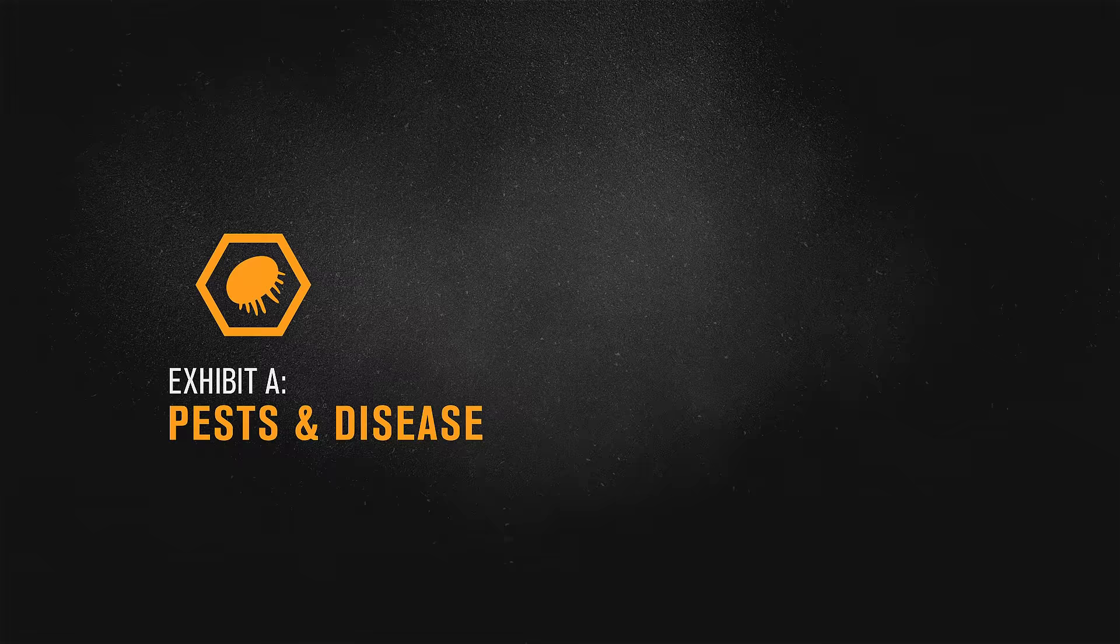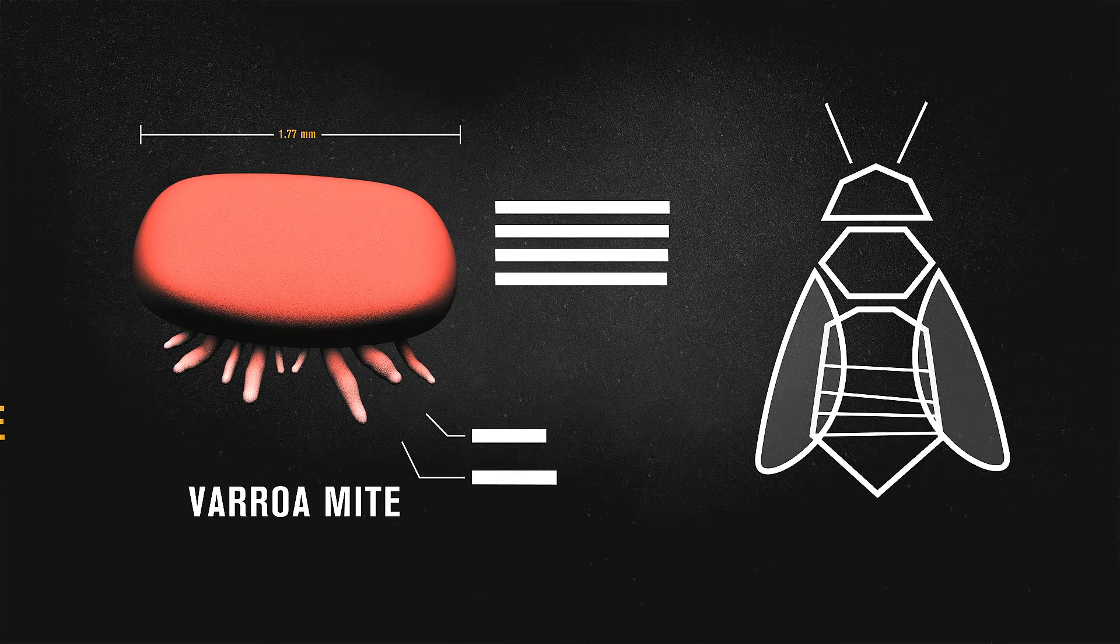Most infamous is the varroa mite, a minuscule red pest that not only invades colonies and feeds on bees, but also transfers pathogens that stunt bee growth and shortens their lifespan.